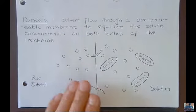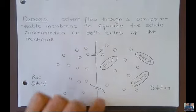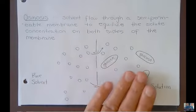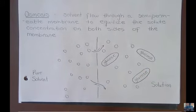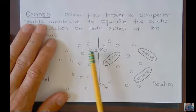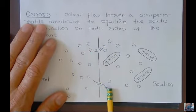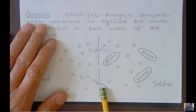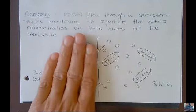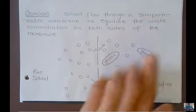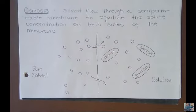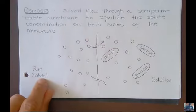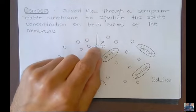Osmosis is solvent flow through a semi-permeable membrane to equalize the solute concentration on both sides of the membrane. You definitely need to have these liquids separated by the membrane. If you put the same exact liquid on both sides at the same concentration, there's not going to be any pressure buildup because the arrows going from left to right would be the same as right to left.